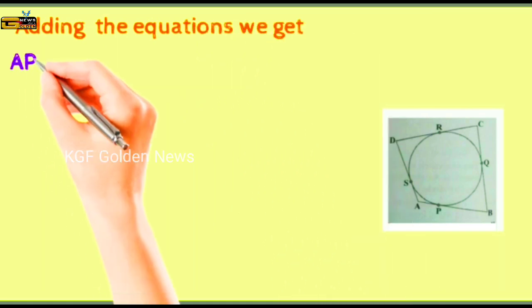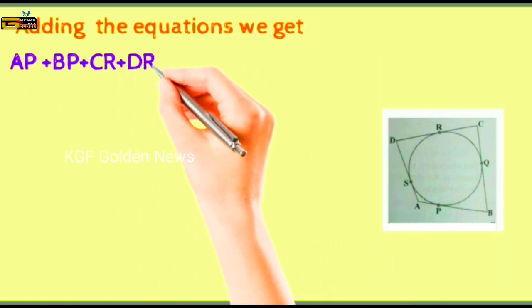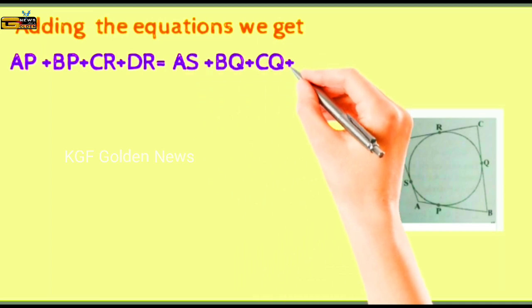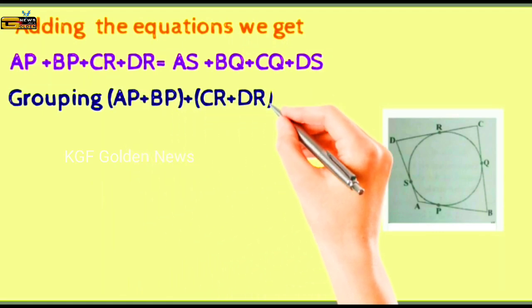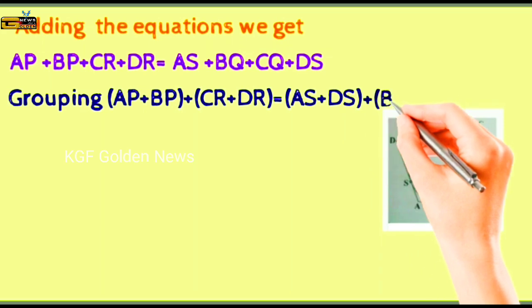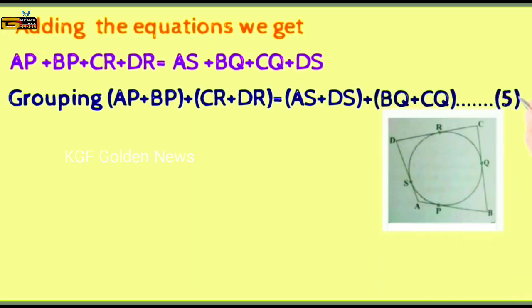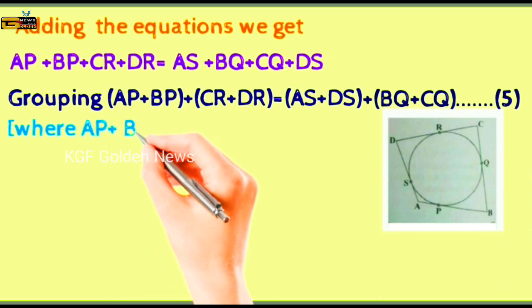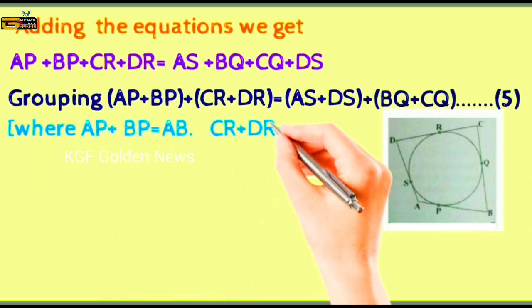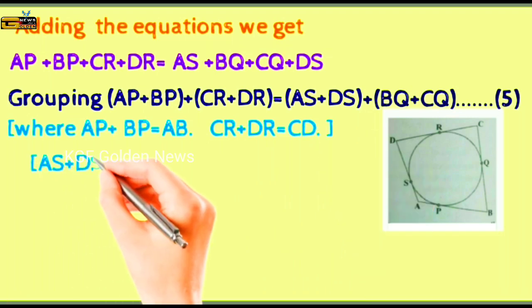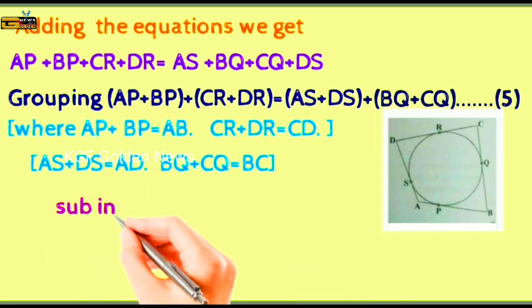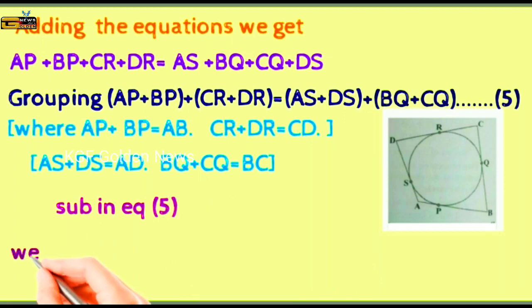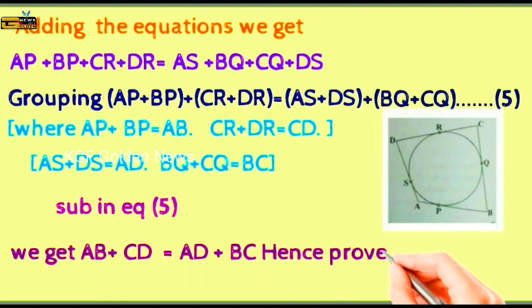Adding the equations we get AP plus BP plus CR plus DR equal to AS plus BQ plus CQ plus DS. Grouping AP plus BP plus CR plus DR is equal to AS plus DS plus BQ plus CQ equation 5. Where AP plus BP is equal to AB, CR plus DR is equal to CD, AS plus DS is equal to AD, BQ plus CQ is equal to BC. Substituting in equation 5 we get AB plus CD is equal to AD plus BC. Hence proved.